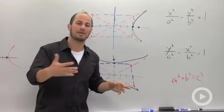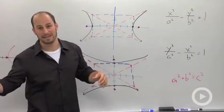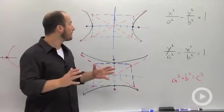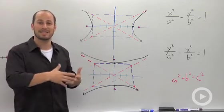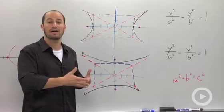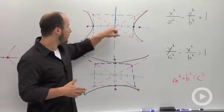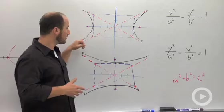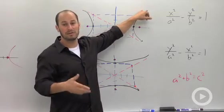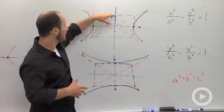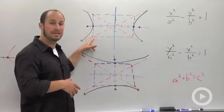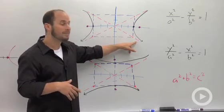There's different technical terms for it. Some books will call it the fundamental rectangle. I just call it the silly box, because what the silly box really does is gives us the tools to find our asymptotes. If you connect the corners of your box, the opposite corners, those are going to end up being the asymptotes for this curve. So you have one from one corner to the other, and then you do the opposite way as well.